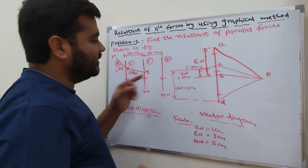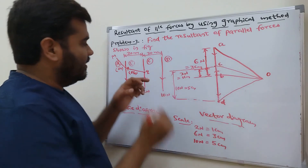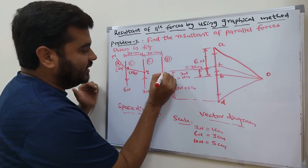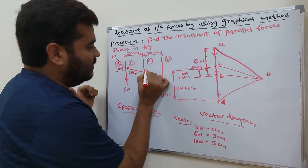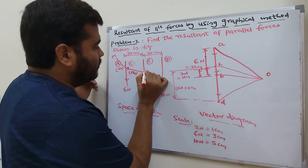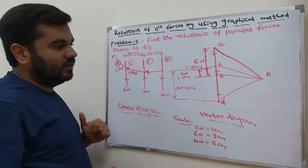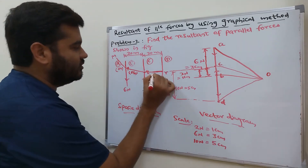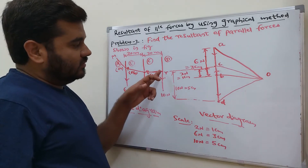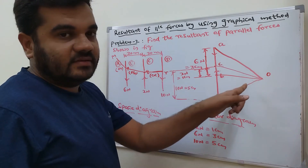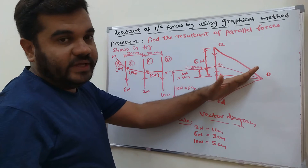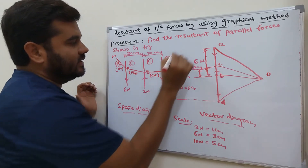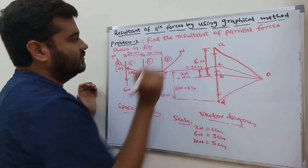Start from point Q and draw a line parallel to OC, which meets the third force line at point R — so QR is parallel to OC. Then start from point R and draw a line parallel to OD, giving RN parallel to OD.